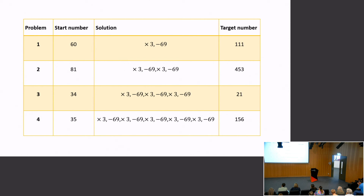What he did is he got university students to solve a series of problems. They were given a starting number and a target number, and they had to get from the starting number to the target number using a combination of only two rules: you can either multiply by three or subtract 29. These are the solutions to each of the problems he asked, and notice in each case the solution involves simply alternating the moves — times three, minus 29, times three, minus 29. There's a pattern: you're never going to get from A to B by subtracting 29 two times in a row.